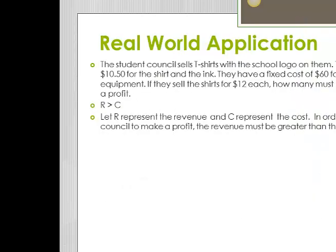Here's our last example — a real-world application, a word problem. The student council sells t-shirts with a school logo. The unit cost is $10.50 for the shirt and the ink, and they have a fixed cost of $60 for the silk screen equipment. If they sell the shirts for $12 each, how many must they sell to make a profit? We're going to let r represent the revenue and c represent the cost. In order for the student council to make a profit, the revenue must be greater than the cost.